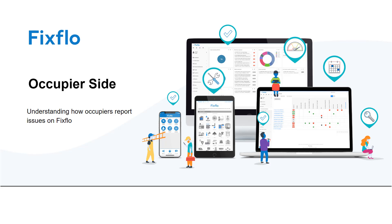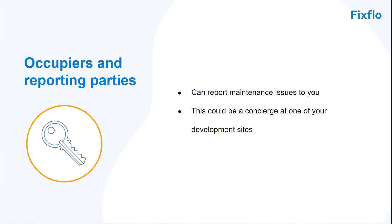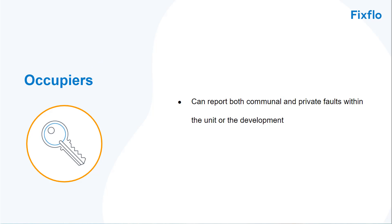This video will take you through the occupier side of FixFlow's Build to Rent system. This is where your occupiers and reporting parties will report maintenance issues to you. This could be a concierge at one of your development sites. Occupiers can report both communal and private faults within the unit or the development.